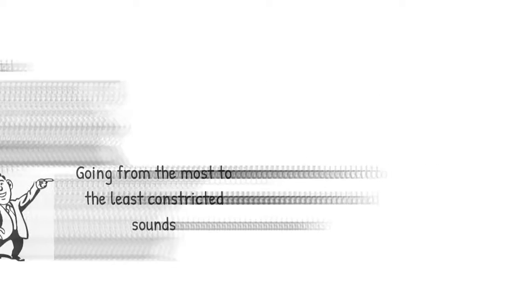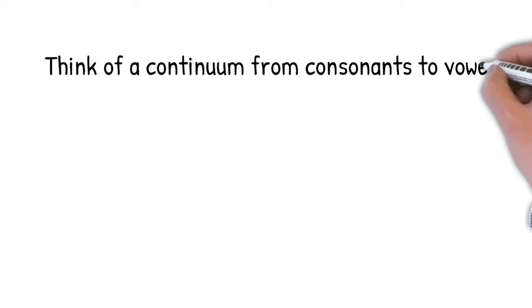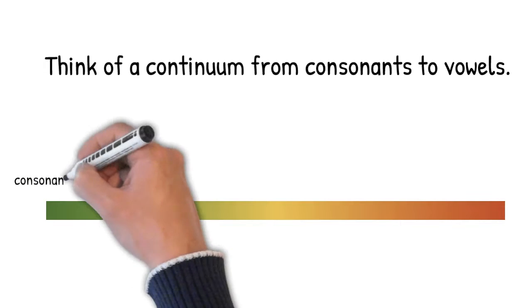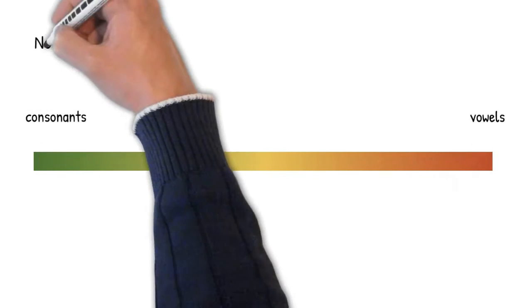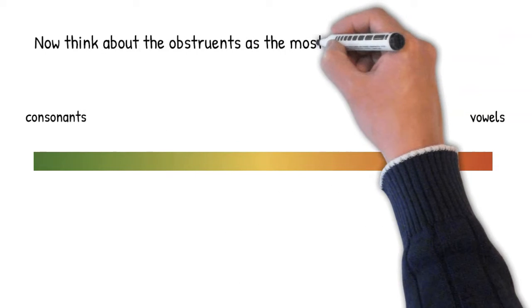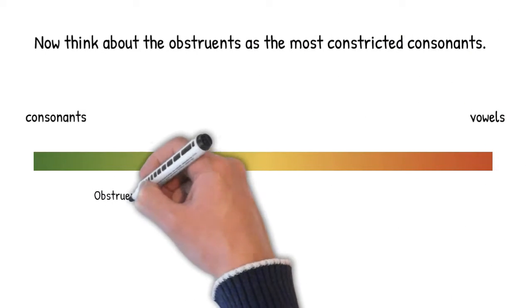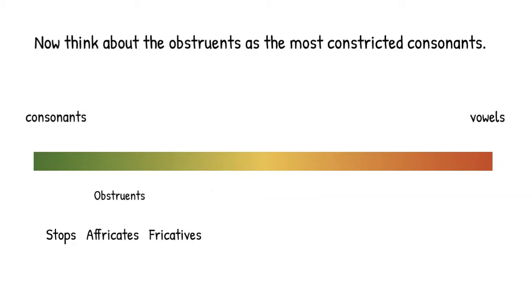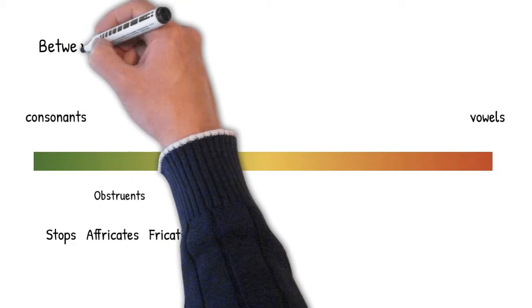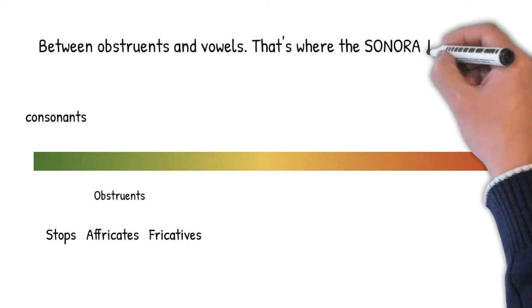We can imagine, for example, a continuum that runs from consonant sounds to vowel sounds. We can think of the obstruents as occupying one end of the continuum, the most constricted end for consonants. Now between the obstruents and the vowels, that's where the sonorants live.